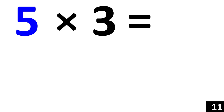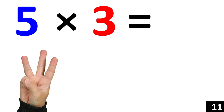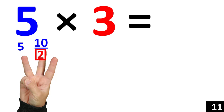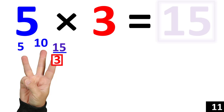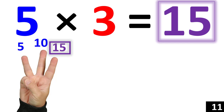5 times 3 is the same thing as counting by 5 three times. 5. 10. 15. Therefore 5 times 3 is equal to 15.